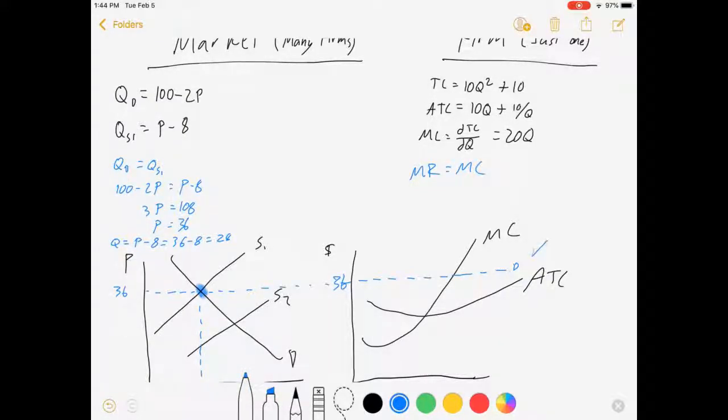Well, this demand curve has a slope of zero, which means the marginal revenue curve has the same slope, and it is the demand curve, and it is price. All of those things are the same in perfect competition. So that said, what we're really doing, because this is perfect competition, is that we're setting P equal to MC. So 36 equals 20Q, which means Q equals 1.8.